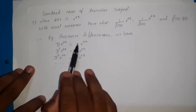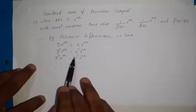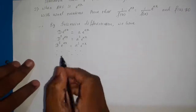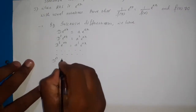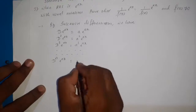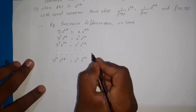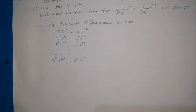As the power of D increases, the power of a on the RHS also increases with the same power: D gives a, D² gives a², D³ gives a³. So D^n · e^(ax) equals a^n · e^(ax), because the nth derivative of e^(ax) is a^n · e^(ax).